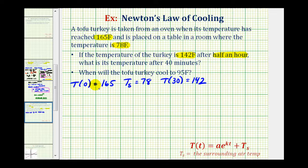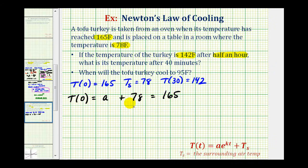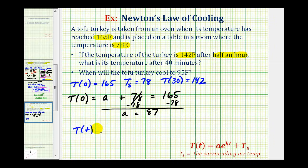Let's start with the fact that T of zero equals 165. So T of zero would be equal to a times e raised to the power of k times t, but t is zero, so we have e to the zero, which is equal to one, and a times one is just a, plus T sub s, which is 78 degrees. So we get a equals 165 minus 78, which gives us a equals 87.